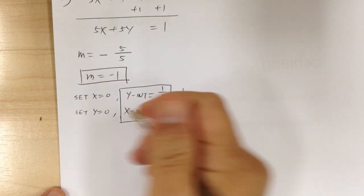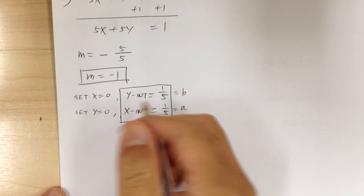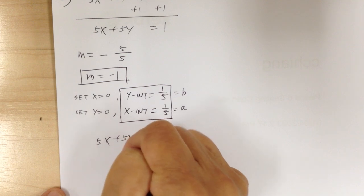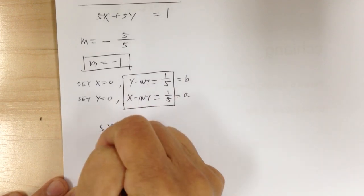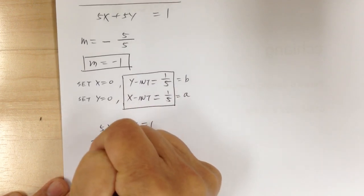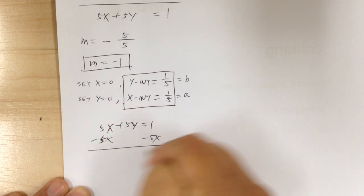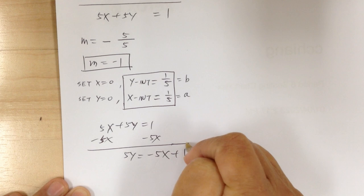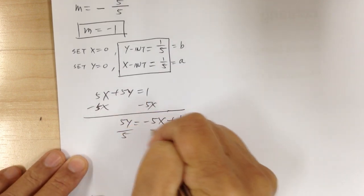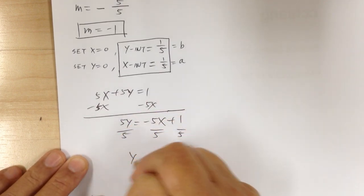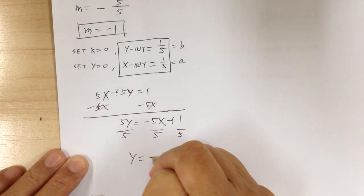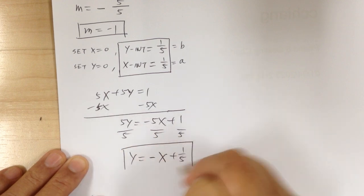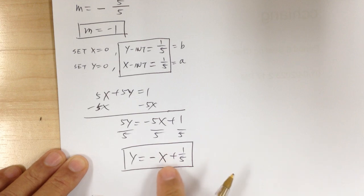Now put in slope-intercept form: subtract 5x from both sides to get 5y equals negative 5x plus 1. Divide everything by 5, so y equals negative x plus 1 over 5. That's the slope-intercept form.